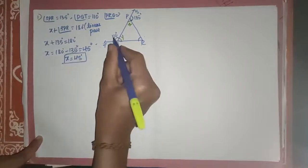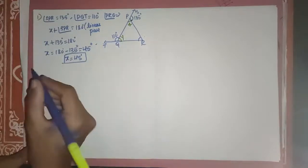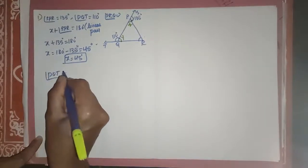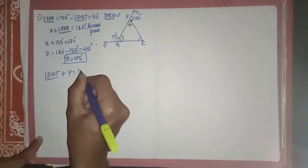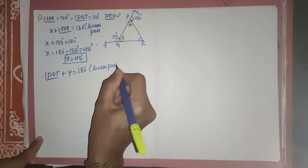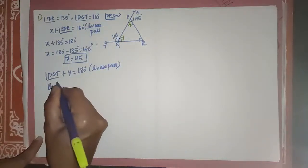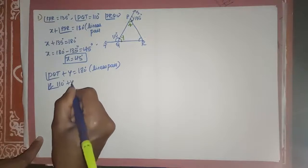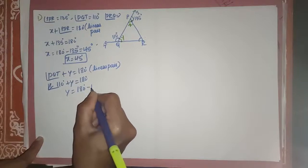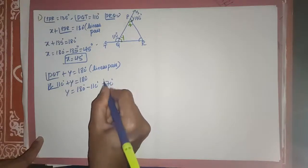Now we find angle Y. The angles PQT and PQR are also a linear pair, so PQT plus Y equals 180 degrees. PQT is given as 110 degrees, so Y equals 180 minus 110, which equals 70 degrees.